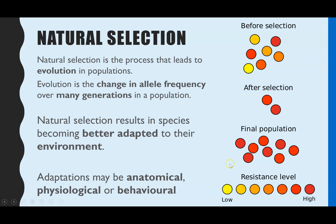Adaptations can be categorised into three types. Anatomical means any structural features, such as the shape of a bird's beak. Physiological relates to different chemical reactions within the body — it might be linked to different quantities or types of chemicals or enzymes an organism has. Finally, behavioural is to do with how the organism behaves to increase its survival, for example penguins huddling together to keep warm in the cold.